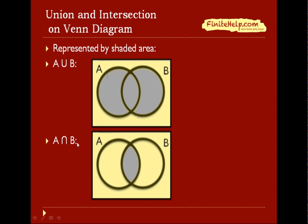A intersect B, which is the elements only common between A and B. So on the Venn diagram, you would shade only what's common between A and B, which is the overlapping area in the middle here.